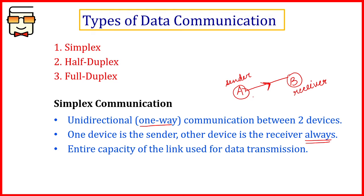Since data is being sent only by one party in one direction, the entire capacity of the transmission medium or link will be utilized for this purpose, because there is only one thing happening — data being sent from A to B. The capacity of the link is not shared or broken down, as it is in the case of full duplex or half duplex connections.